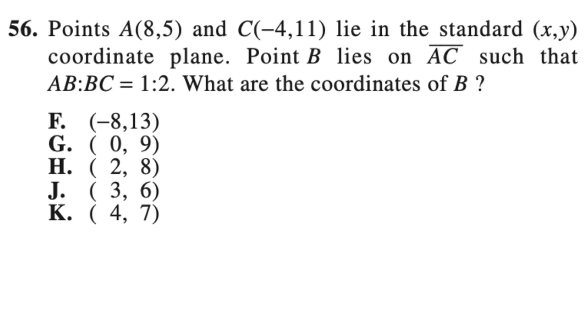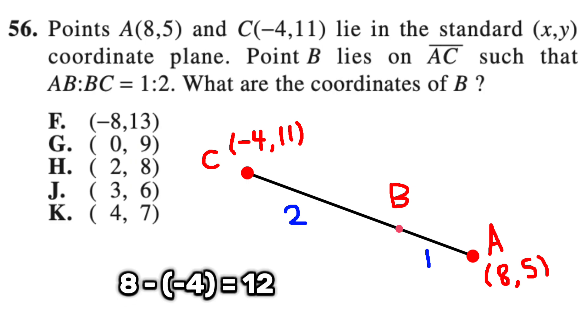This next type of question is also pretty tricky. The problem tells us that the ratio of the line AB to BC is 1 to 2, meaning that the line BC is twice as big as AB. This also means that the point B sits one third of the way across the line AC from point A. So if we draw out the diagram, it would look something like this. And we can find the x-coordinate of B by simply taking the difference of the x-coordinates of A and C, which is 8 and negative 4. So the difference is 12. Now 12 divided by 3 is 4. And now we just have to move 4 units to the left of point A. So 8 minus 4 is equal to 4. So the x-coordinate of point B is 4, leaving only one answer choice K.